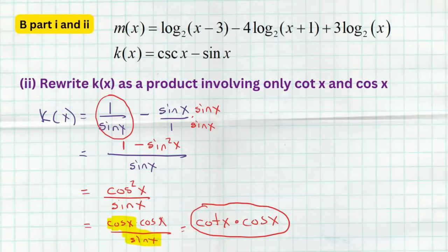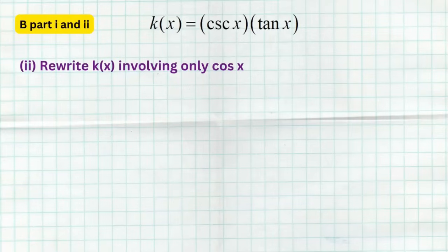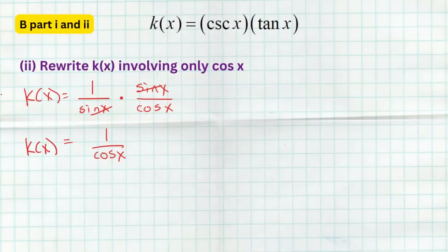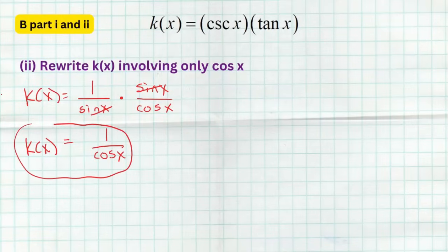Here's one more trig identity problem from Section B. We have another k(x) and the directions say to rewrite involving only cosine. First, change cosecant to 1/sin(x) using the reciprocal identity, then change tangent to sin(x)/cos(x) using the quotient identity. The sin(x) terms cancel, leaving 1/cos(x). That's the final answer since the directions asked to involve only cosine. Note that 1/cos(x) is also equivalent to sec(x), but since they specified cosine only, 1/cos(x) is correct.